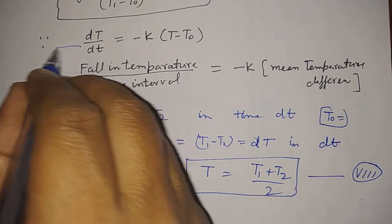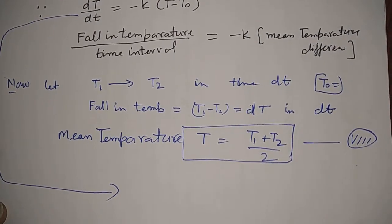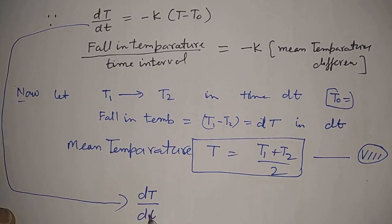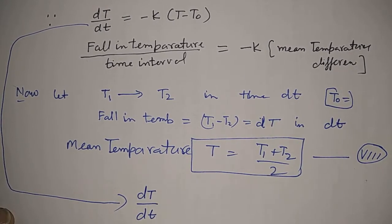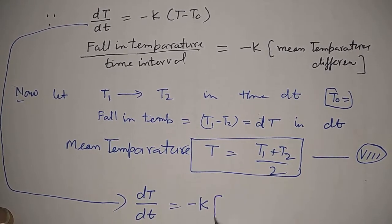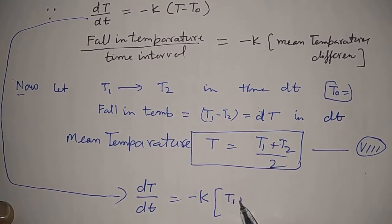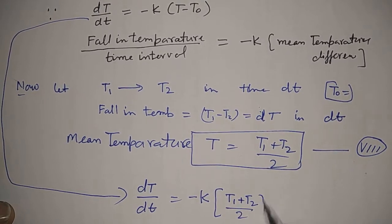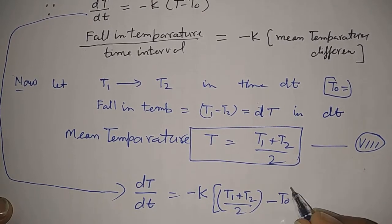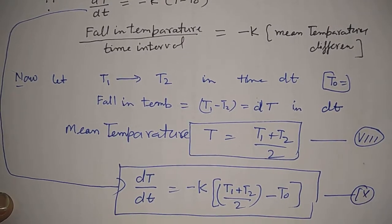Therefore, Newton's law of cooling in detailed form is: the rate of fall of temperature dT by dt equals minus K times [(T1 plus T2)/2 minus T0]. This is the final expression for Newton's law of cooling.